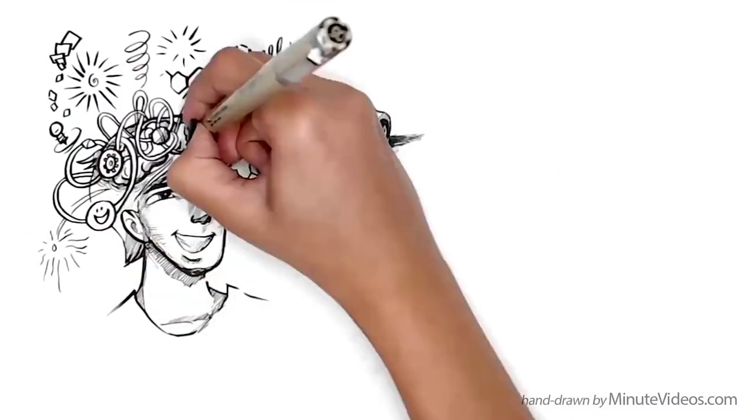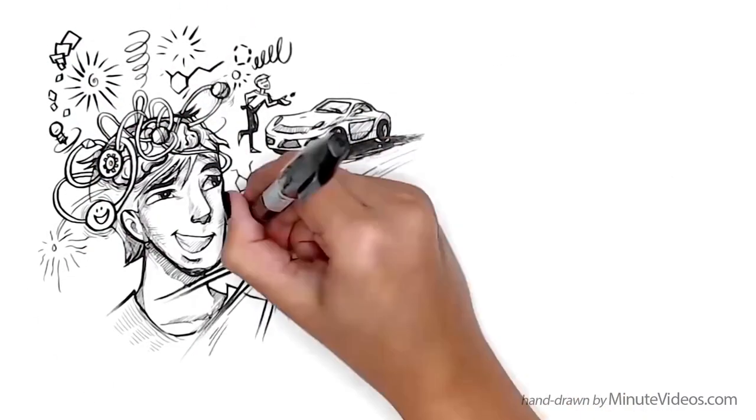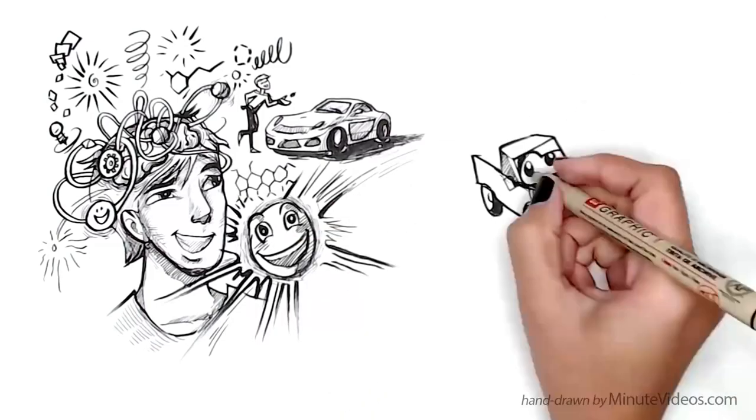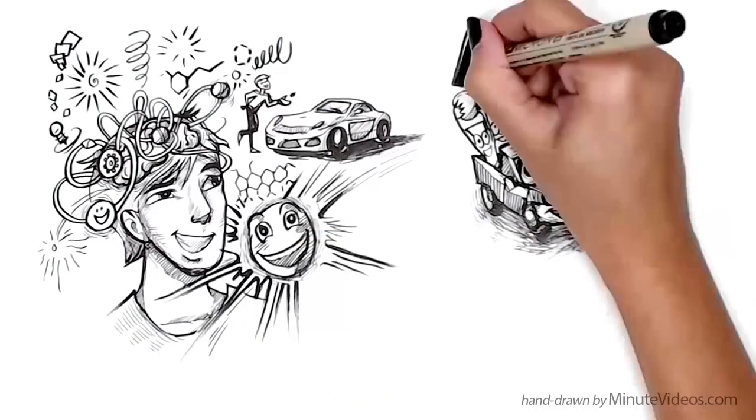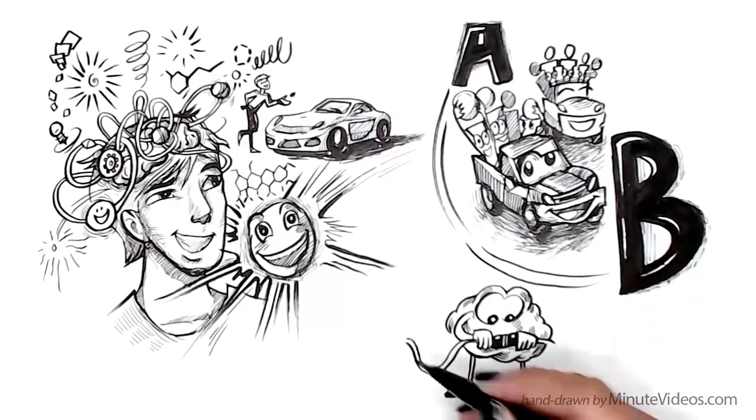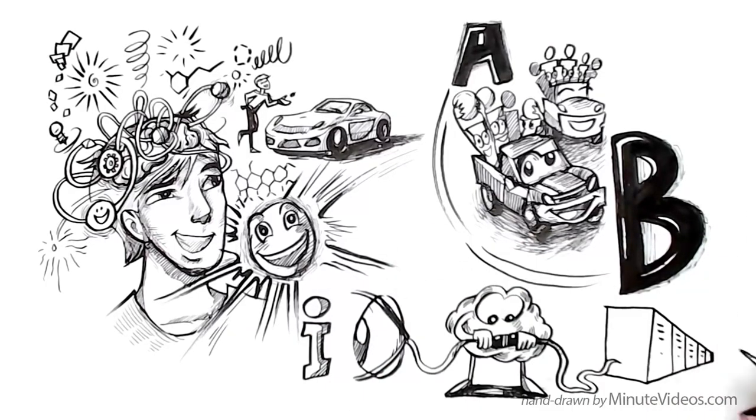While dopamine and endorphin delight us, the other neurotransmitters send information from A to B. This connects new information from outside the brain with stored memories inside. And that's learning.